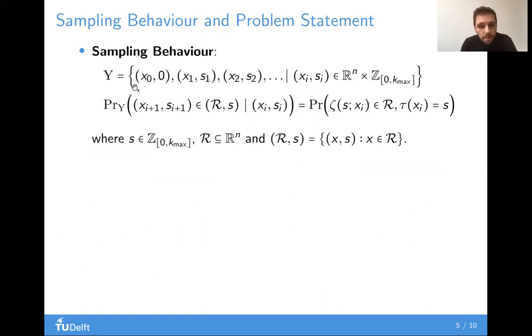We define the sampling behavior of ETC to be the set of sequences of state measurements and inter-sampling times, x and s. The first element of each sequence is x_0, 0, because the first inter-sampling time is assumed 0. Now, this set comes with an associated probability measure, which is defined by this formula. Given the previous element of the sequence x_i, s_i, the probability that the next element is in R, s, where R is a region in R^n, is equal to the probability that the state from initial condition x_i at time s belongs in R, and that the inter-sampling time of x_i is s.